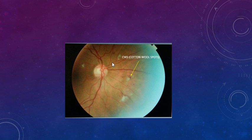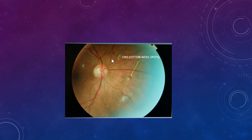Another image of the right fundus shows multiple cotton wool spots representing ischemia and some dot hemorrhages. These changes are most probably suggestive of diabetic retinopathy, though similar features can also be seen in patients with hypertensive retinopathy or vein occlusions.